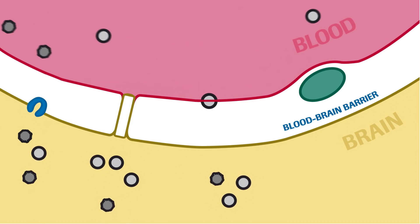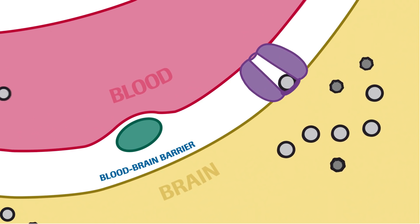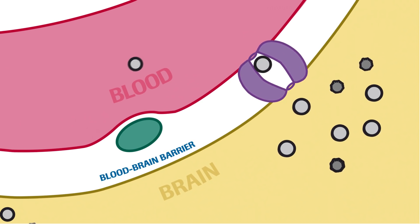The molecules that are allowed to enter the brain then face a second stage of control called active efflux, which ejects some molecules from the brain but not others.